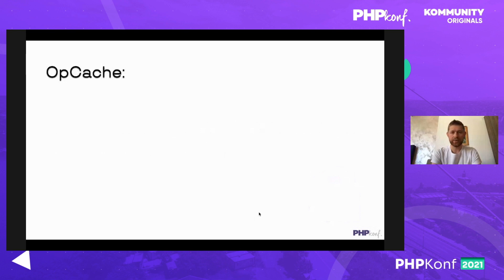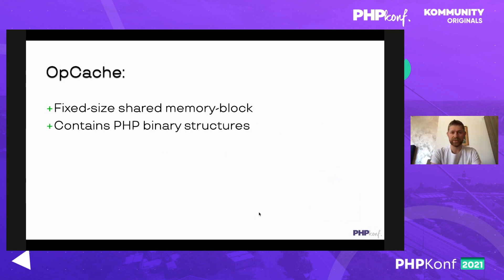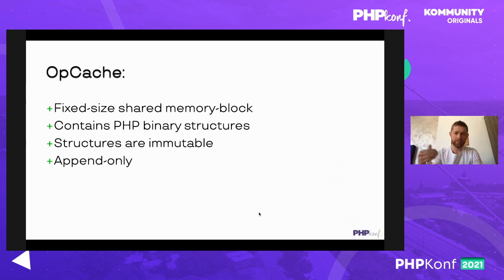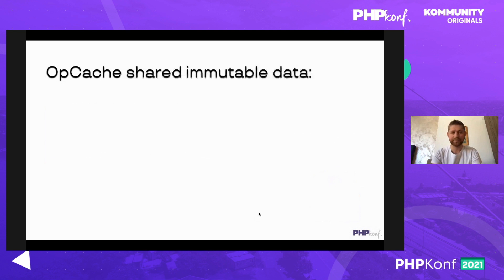Op cache is a fixed-size shared memory block accessible from different processes, containing all binary structures which are by default immutable. Immutability is required to avoid synchronization issues — if two independent scripts tried to update one memory block, we could have problems with memory allocation and defragmentation. Op cache was designed to be append-only, so we can just add more entries until it's filled; if it's filled, no more records can be stored.